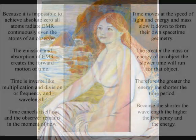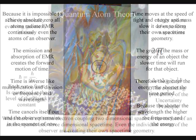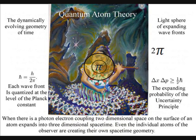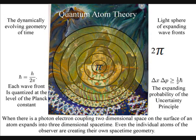To put this very simply, time moves at the speed of light and energy and mass slow it down to form their own spacetime geometry. Therefore the observer will collapse the wave-function creating his or her own independent reality of time and space.